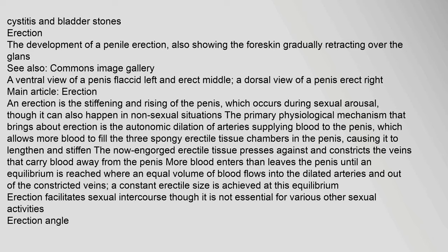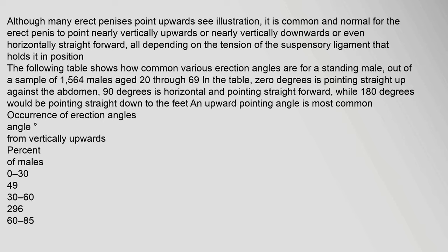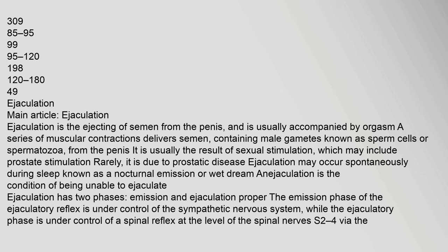Erection facilitates sexual intercourse though it is not essential for various other sexual activities. Although many erect penises point upwards, it is common and normal for the erect penis to point nearly vertically upwards or downwards, or even horizontally, depending on the tension of the suspensory ligament. In a sample of 1,564 males aged 20 through 69, an upward-pointing angle is most common. The angle is measured from vertically upwards: 0–30° (49%), 30–60° (29.6%), 60–85° (30.9%), 85–95° (9.9%), 95–120° (19.8%), 120–180° (4.9%).